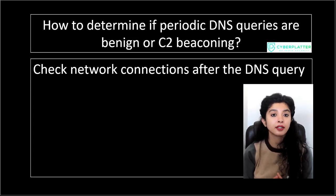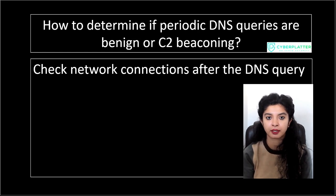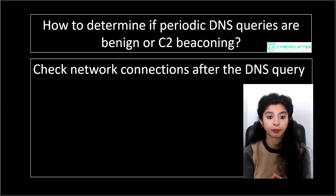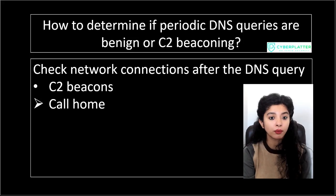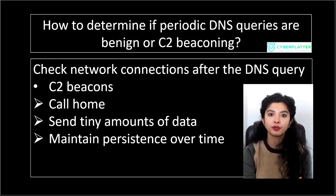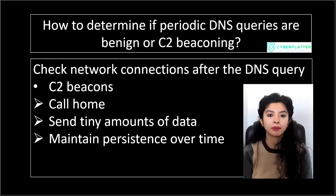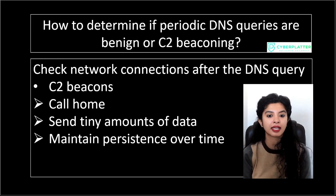DNS is just the first step. You also want to see what happens after the domain resolves — does the endpoint make an outbound HTTP or HTTPS connection to the resolved IP? Are the connections short, repetitive, and low volume? C2 beacons typically call home, send tiny bits of data, and keep repeating this to maintain persistence. Benign applications usually talk to known vendor networks like Amazon AWS, Google Cloud, or established company IP ranges, and their traffic patterns make sense for their purpose.